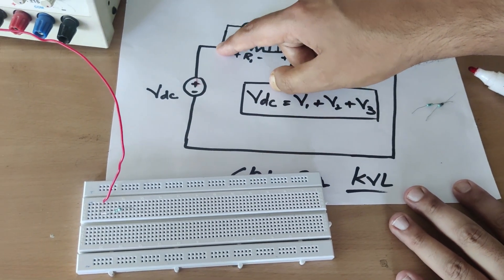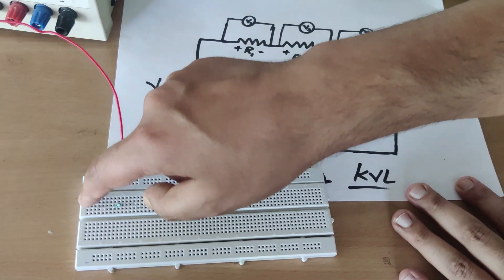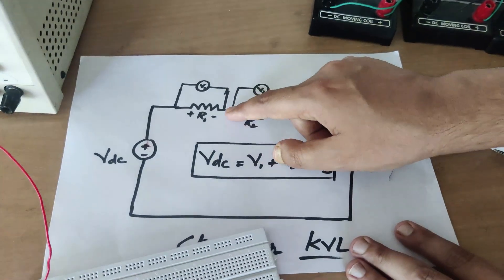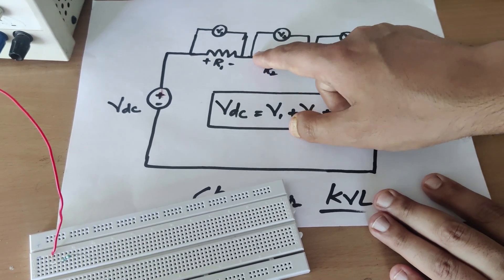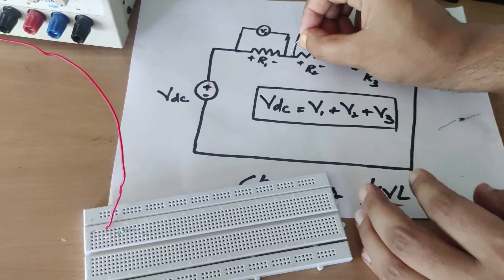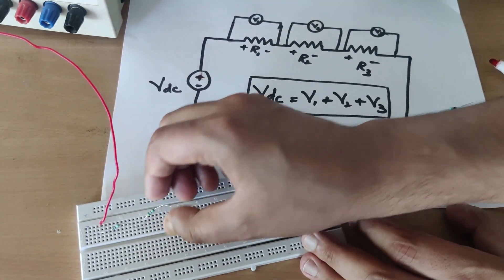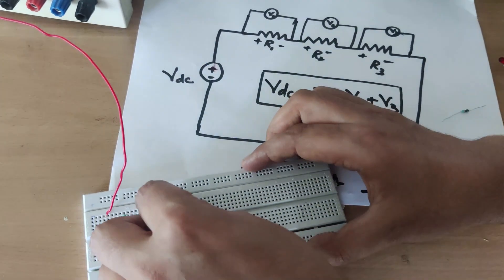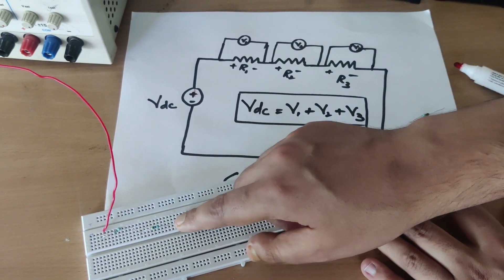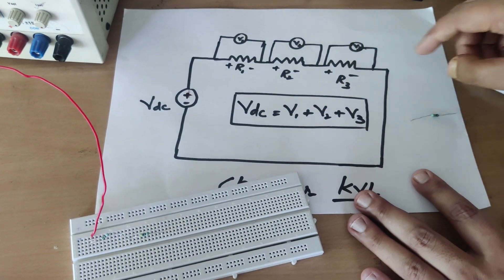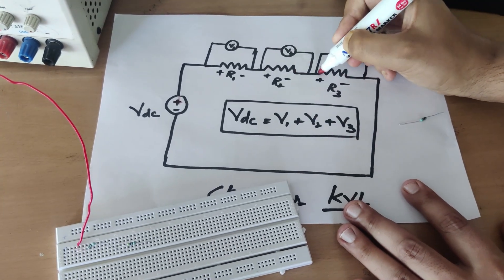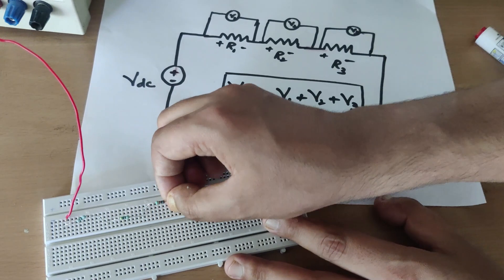I have connected the positive of the supply to one terminal of R1. Now, as shown in the diagram, the other terminal of R1 connects to one terminal of R2. I will bring the second resistor and connect one terminal of R1 with one terminal of R2, placing the other terminal at a different potential. So R1 and R2 are now connected in series. Now I need to connect R3 — one terminal of R2 connects to one terminal of R3. I have now connected all three resistors R1, R2, and R3 in series.